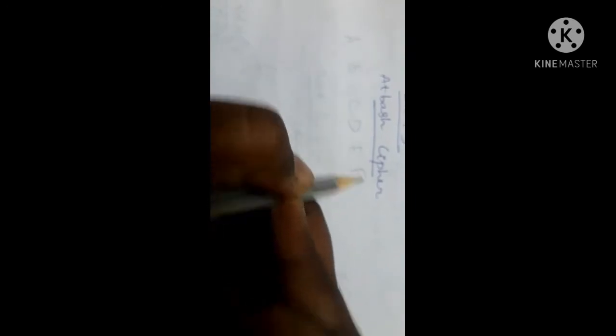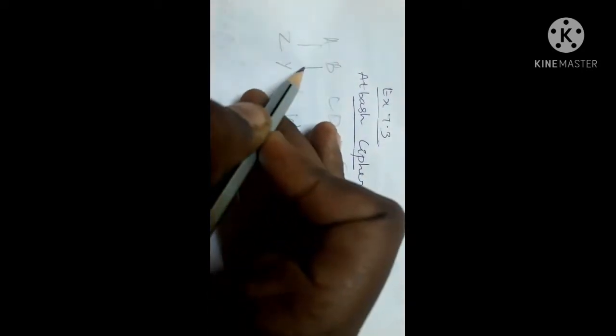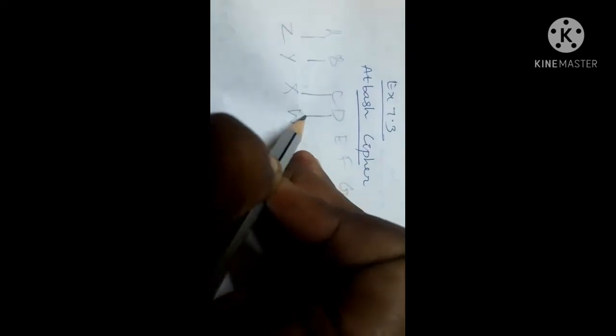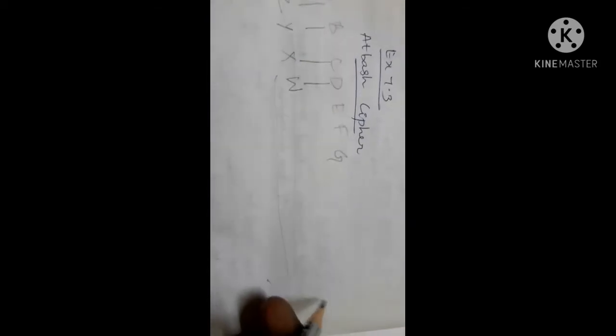In exercise 7.3, you have a different concept called Atbash cipher — it is the game of alphabets. First, you should write the alphabets in order. Then in reverse, you should write them below. So A equals Z, B equals Y, C equals X, D equals W, like that, all the way till Z equals A.